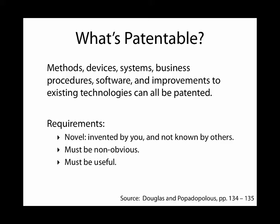What is patentable? You can patent a method — how to do something — you can patent the device itself, systems, business processes or procedures, and software. And you can improve any of those and patent them again.